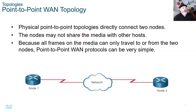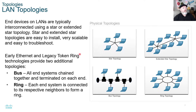Physical point-to-point topologies directly connect two nodes. Nodes do not share the media with other hosts, and because all frames can only travel to or from those two nodes, point-to-point WAN protocols can be very simple. For LAN topologies, end devices are typically interconnected using a star or extended star topology. Star and extended star topologies are easy to install, very scalable, and easy to troubleshoot. In a star topology you typically have a switch at the center for more ports, with all end devices connected to it.